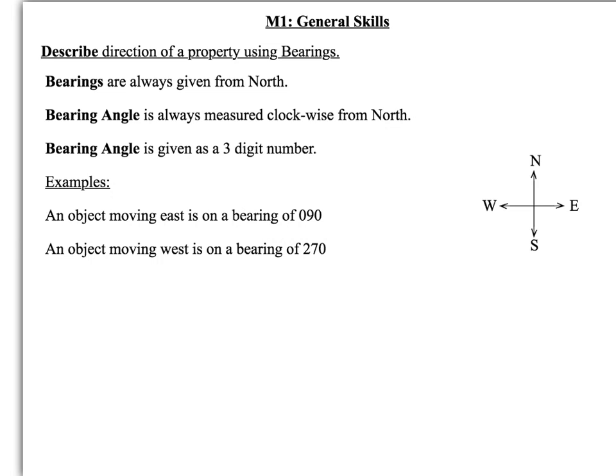And so an object moving east, given that it's going from north and measured clockwise, would be going at 090 degrees bearing. And while moving west, going all the way round clockwise, would be going at 270 degrees there. So that's bearings.